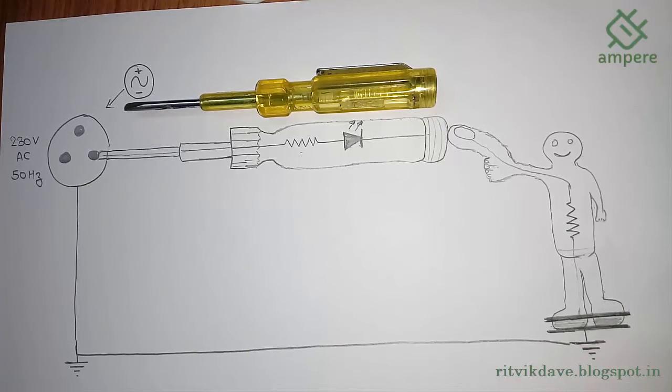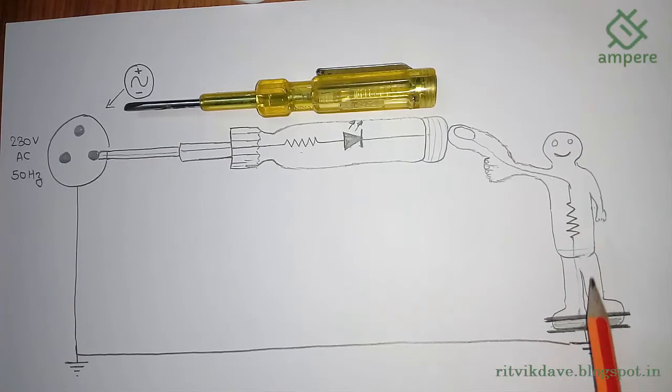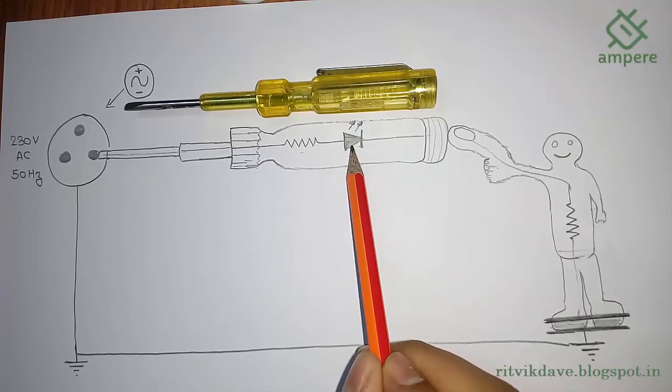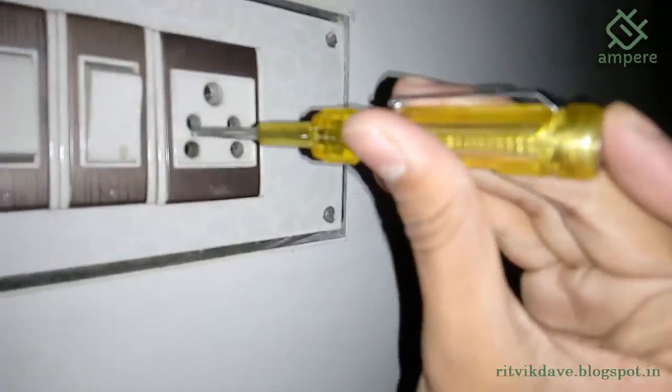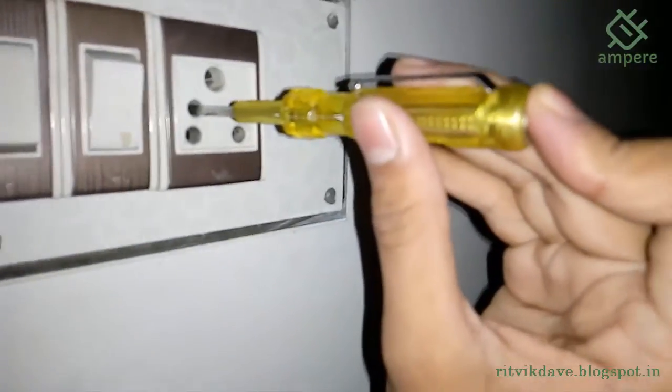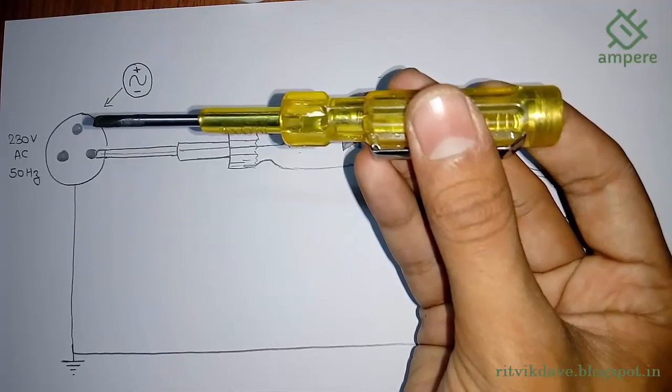When we plug in this supply, the circuit completes and the neon lamp glows. Just hold your screwdriver like this and plug it into an AC main supply. The neon lamp is glowing right now, which means voltage is present in my socket. This is how it works.